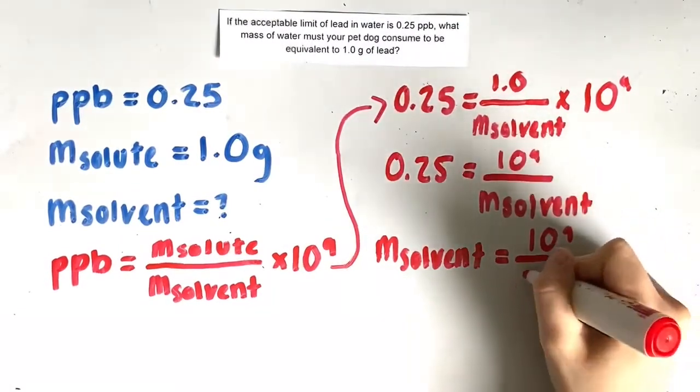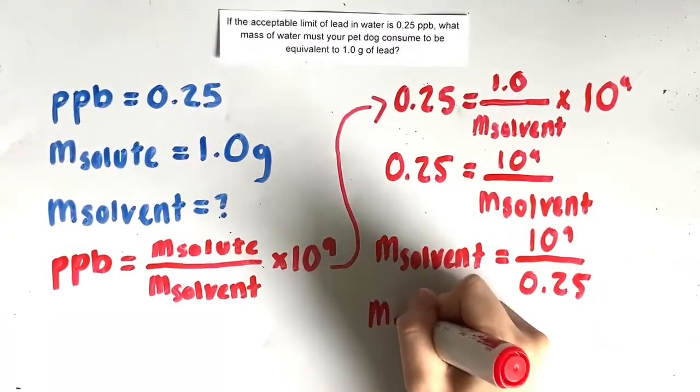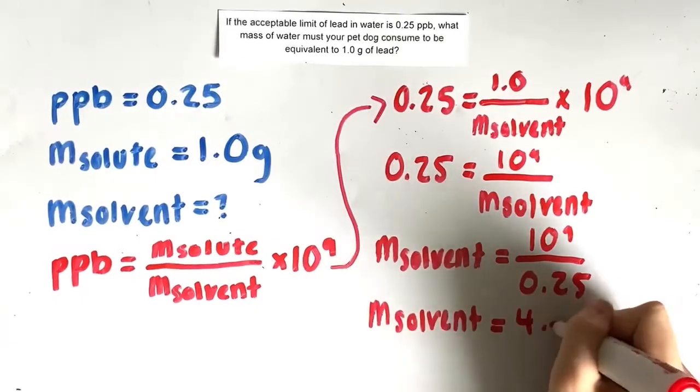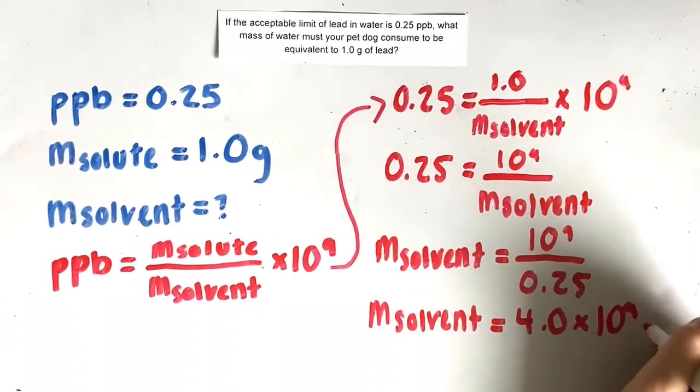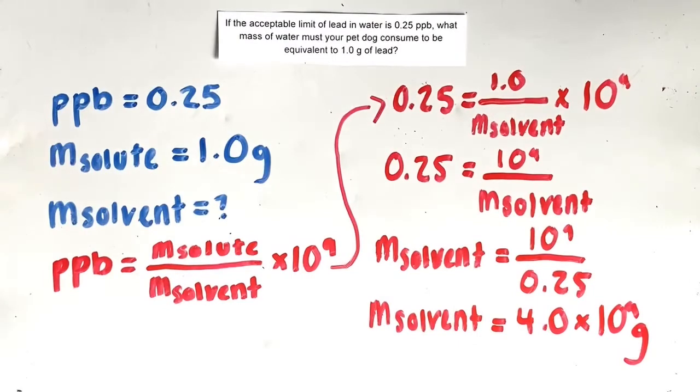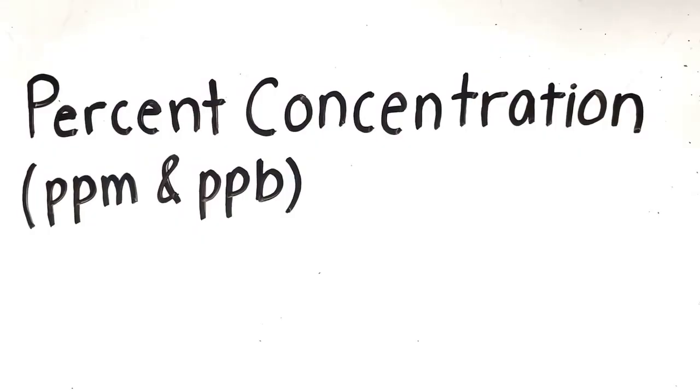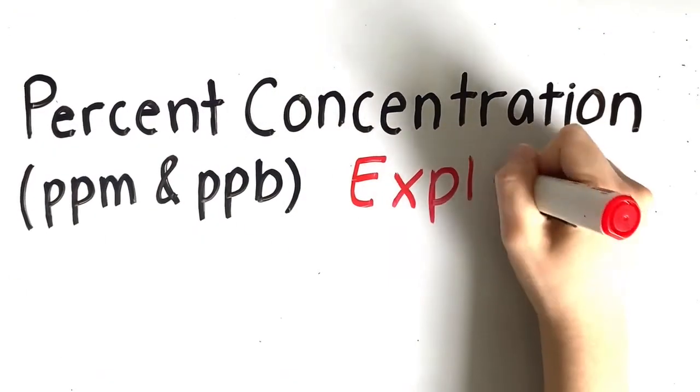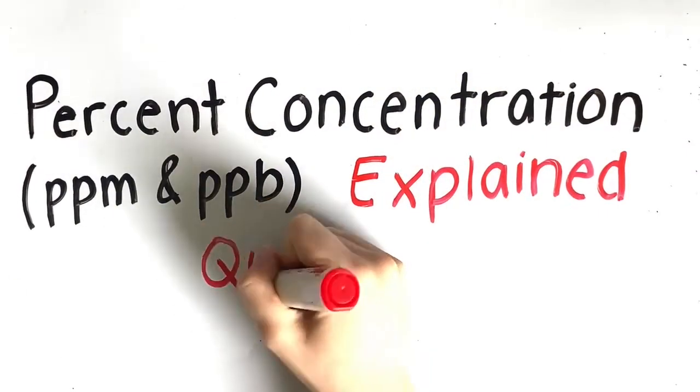That tells us that our solvent is equal to 10 to the power of 9 over 0.25, which is equivalent to 4 times 10 to the power of 9. Therefore, to be equivalent to 1 gram of lead, your dog must consume 4 times 10 to the power of 9 grams of water. And that's percent concentration in parts per million and parts per billion explained quickly.